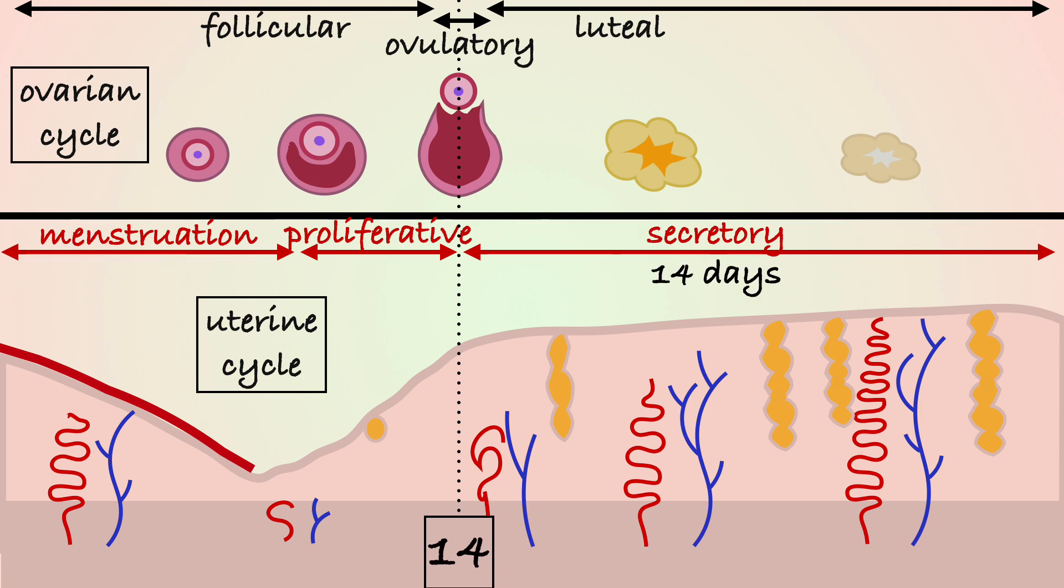The duration of the secretory phase is relatively constant, averaging 14 days, so subtracting 14 days from the length of the menstrual cycle should give an approximate date of ovulation.